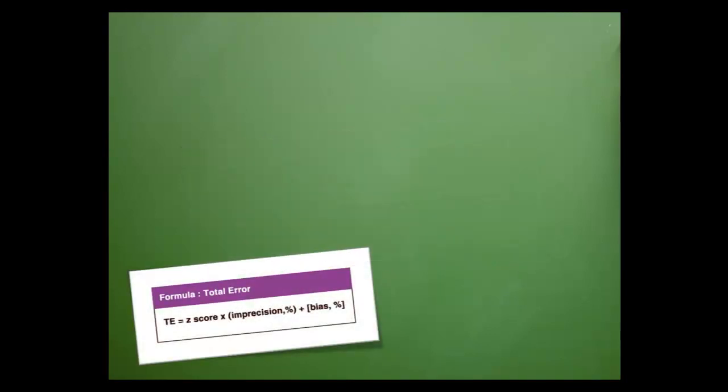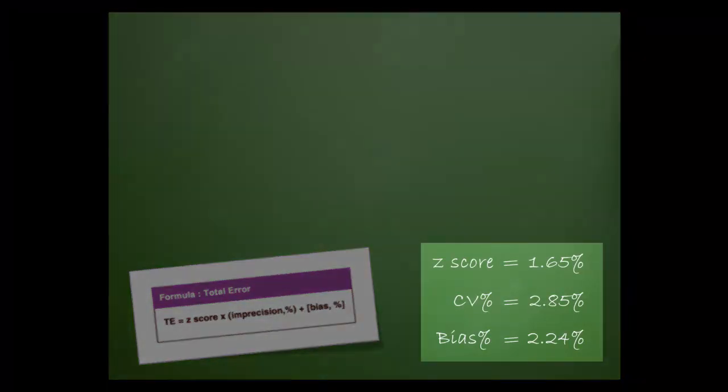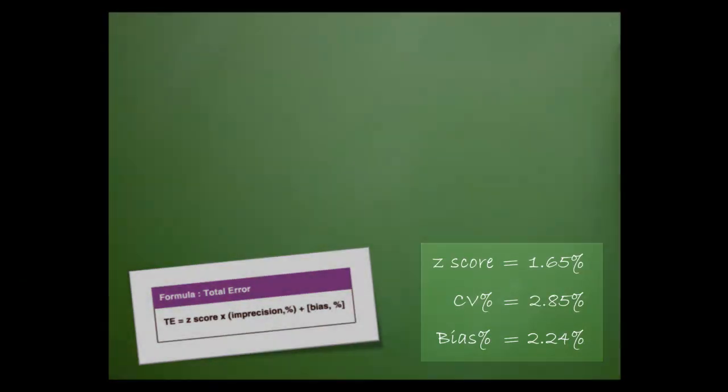Let's move our formula down in the corner, just in case we need it. These are our values for z-score, CV percent, and bias percent.